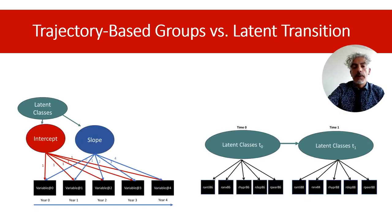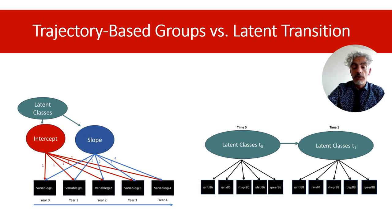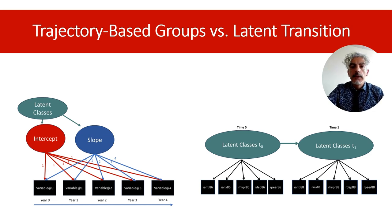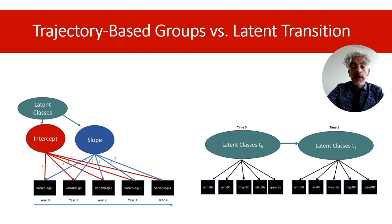Before I go on, I wanted to outline some key differences between trajectory-based models and another type of mixture model for longitudinal data: latent transition analysis. I have also prepared a presentation and material on latent transition analysis for NCRM. The key difference is that trajectory-based group models represent groups that differ qualitatively in their behavior over a period of time — the latent classes represent distinct patterns of change that unfold over a period of time.